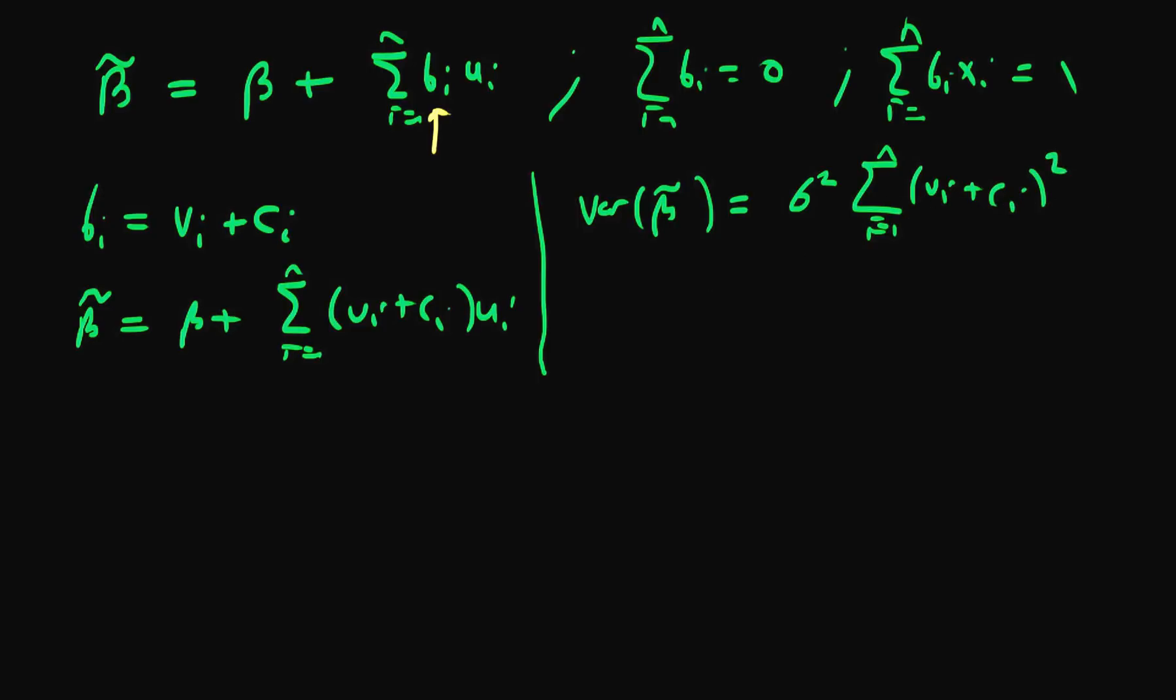If you don't understand why I've squared this, it's because the variance of some number a times a stochastic variable x equals a squared times the variance of x. I go into more detail when I derived the variance for the least squared estimator a few videos ago.